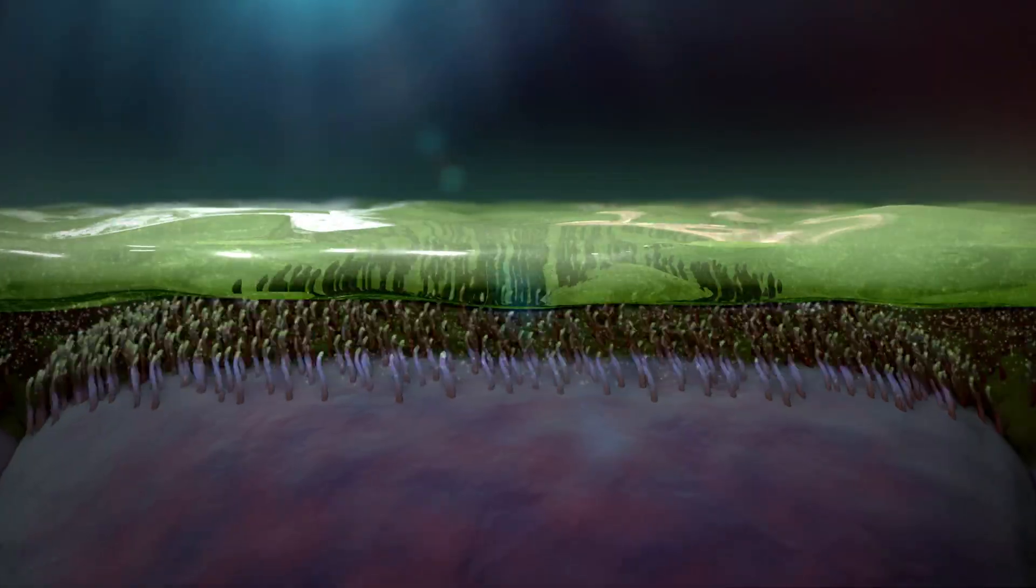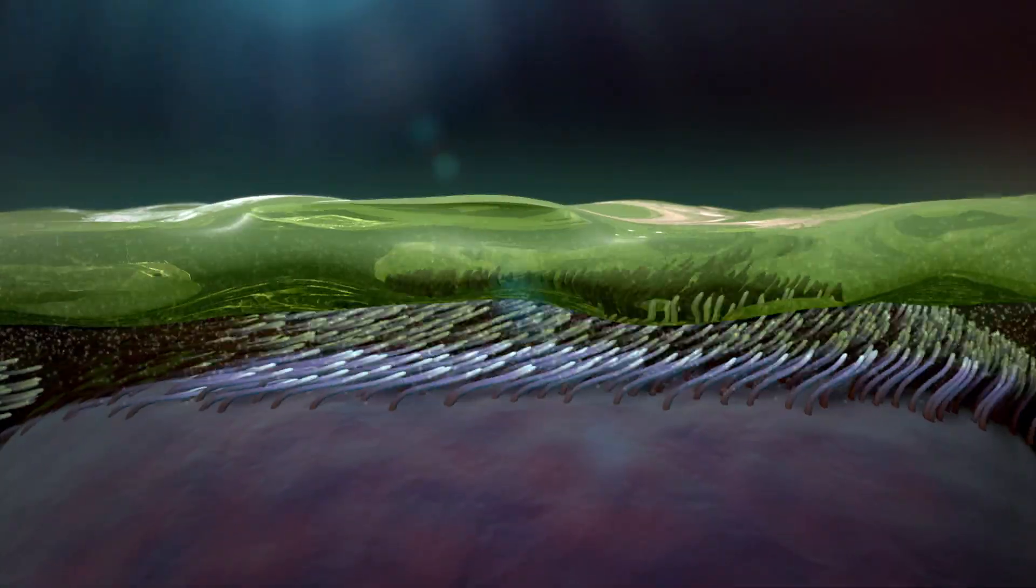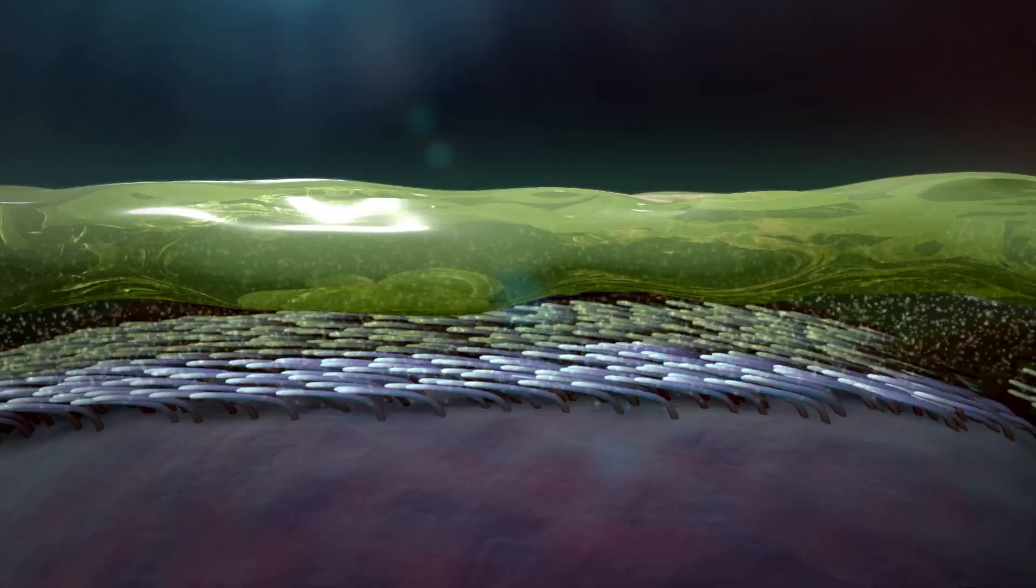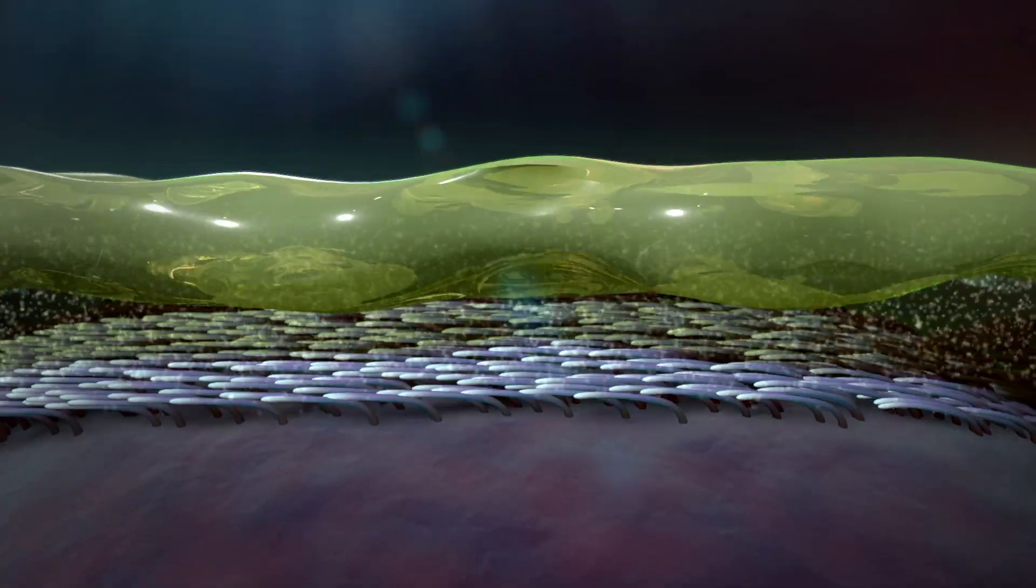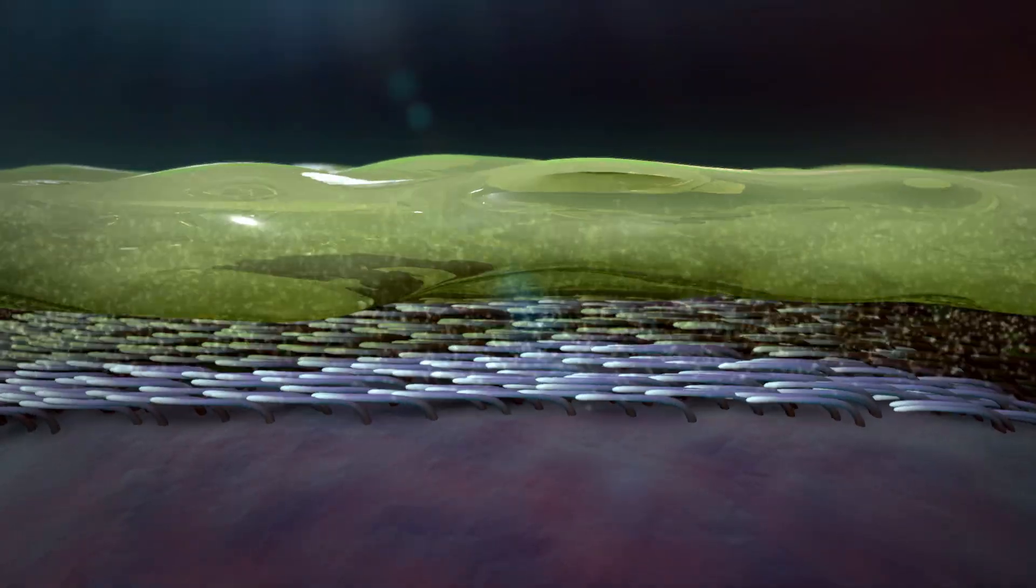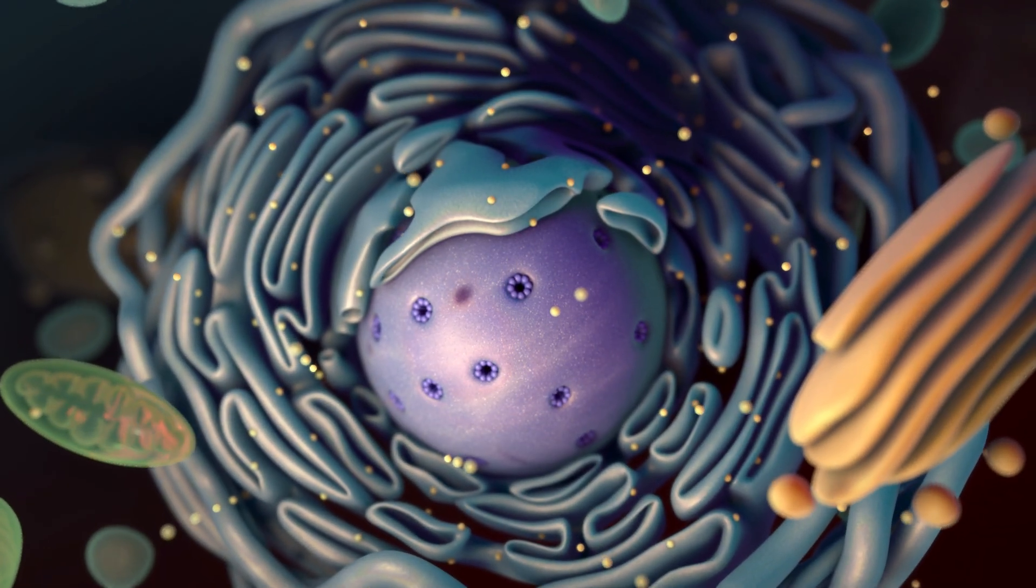In cystic fibrosis, thick sticky mucus presses down on cilia inside the lungs, preventing the cilia from beating and clearing the mucus. The cause of this problem is an abnormal CFTR protein created from genetic mutations inside the cell nucleus.